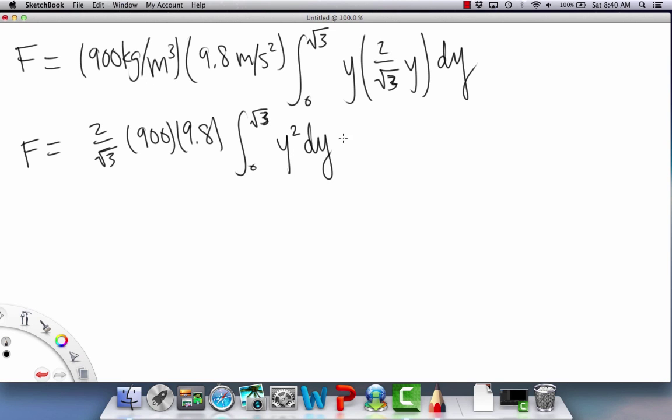We're going to get everything in front, 2 over radical 3, and then we have 900 and our 9.8. And this is going to be the y squared. When you integrate that, that is 1 over 3 y to the third. And then we have radical 3 up there and a 0 down there.